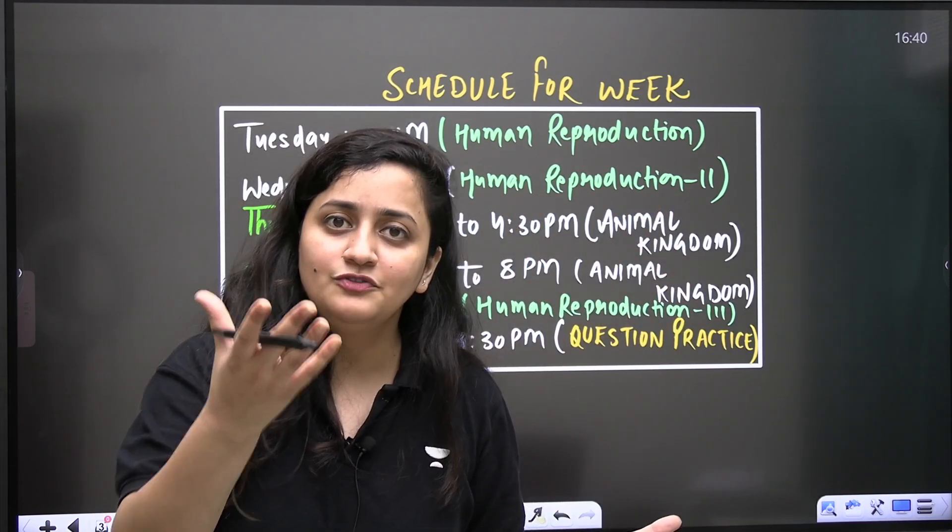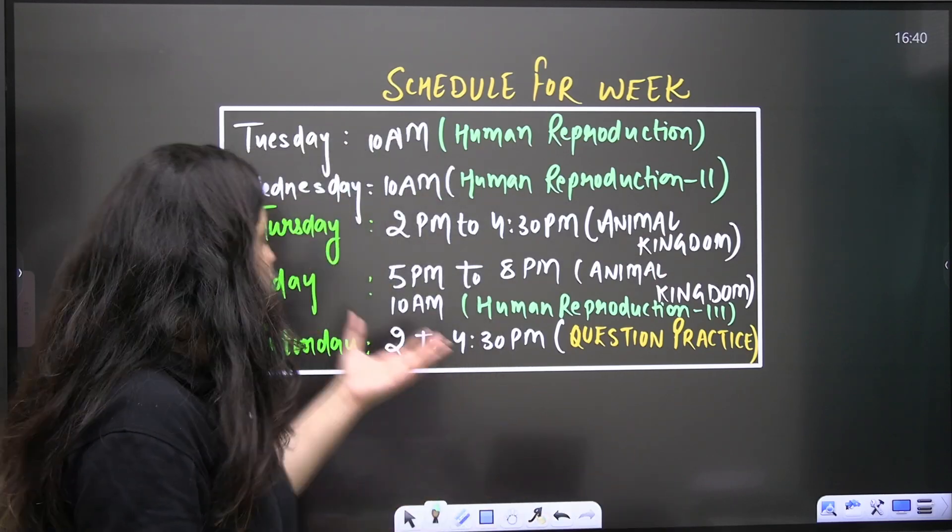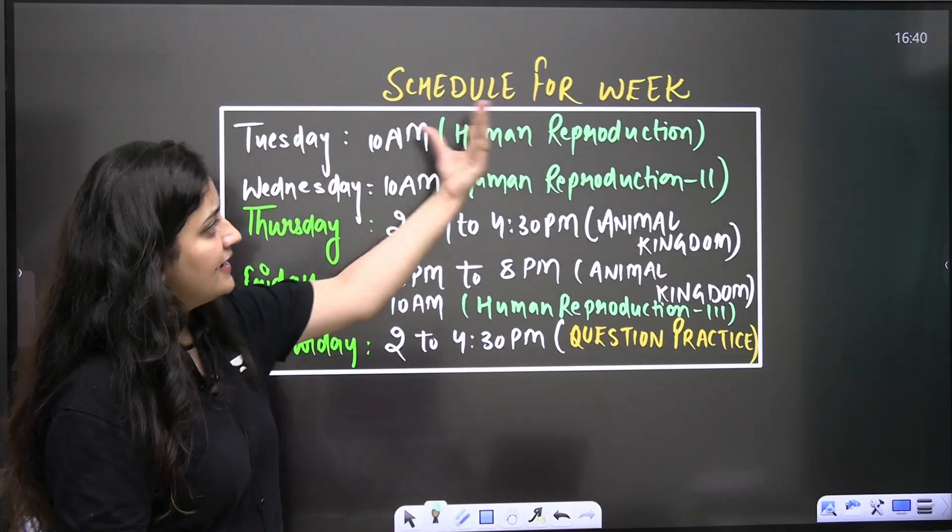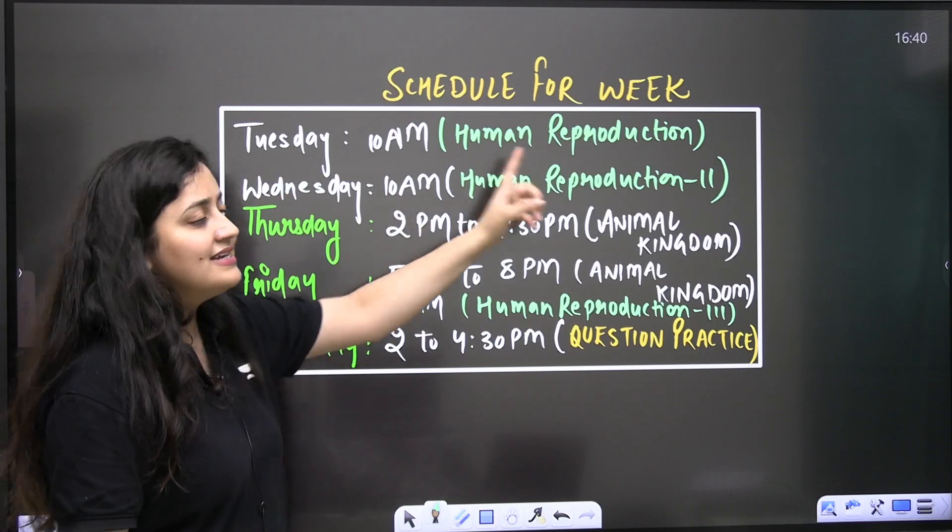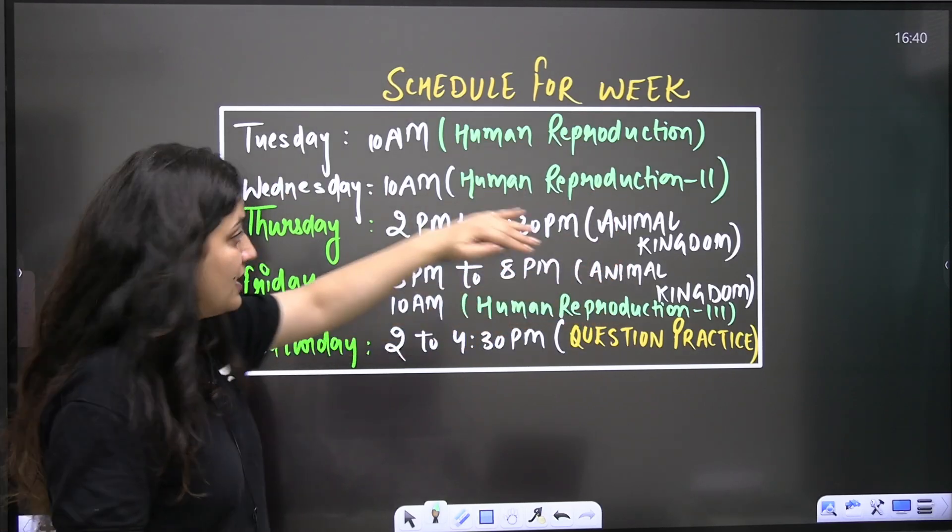So obviously, these classes are for the droppers as well. So here you people can see Tuesday, 10 a.m. human reproduction, Wednesday, 10 a.m. human reproduction part 2. Here, Thursday from 2 p.m. to 4:30 p.m.